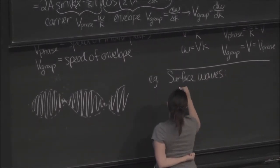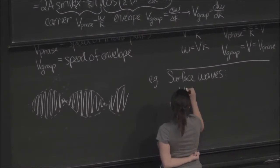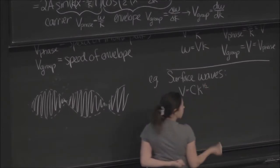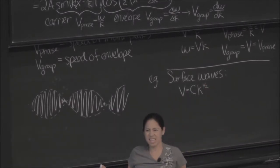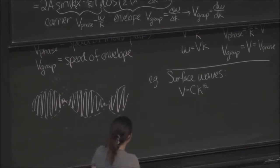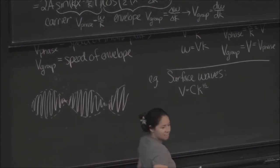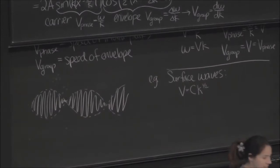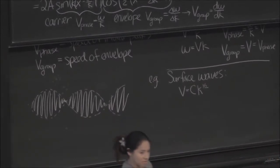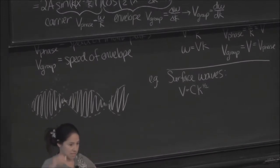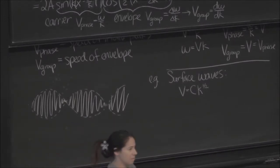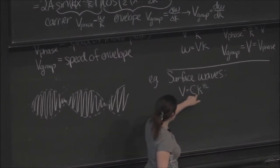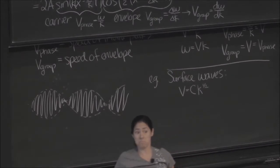Surface waves from recitation yesterday. I believe we found that the speed of the wave went at some constant times the wave number to the one-half. Does that seem right? From recitation yesterday with dimensional analysis, you're finding the powers of k and rho and all sorts of things. I believe you got the speed of wave as the square root of the wave number.